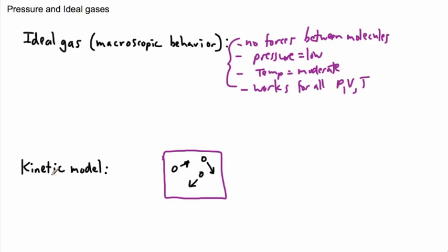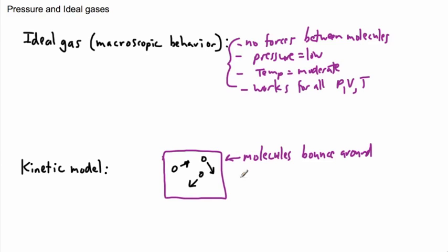In an ideal gas, we consider molecules just bouncing around — that's the main thing. Now, the faster they move, the higher the temperature, because temperature is defined as the average kinetic energy.